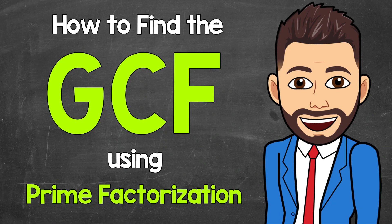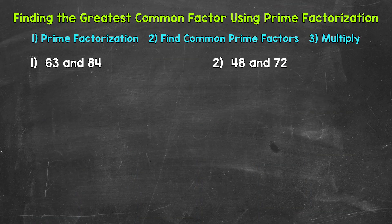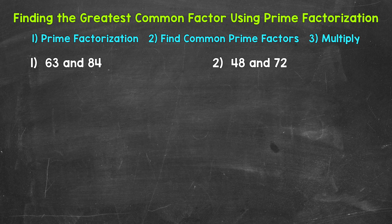Welcome to Math with Mr. J. In this video I'm going to cover how to find the greatest common factor, also known as the GCF, using prime factorization. I like using this strategy and find it helpful when working with numbers that are a little larger in value. The strategy of listing out all of the factors can be difficult and time consuming with larger numbers, so this is a different approach to be familiar with when it comes to finding the greatest common factor.